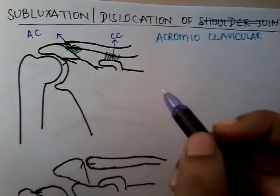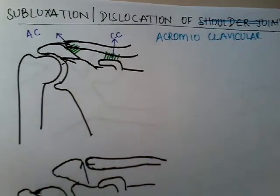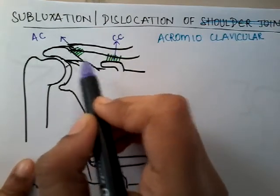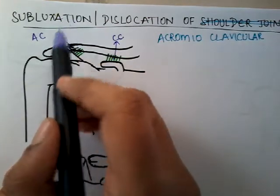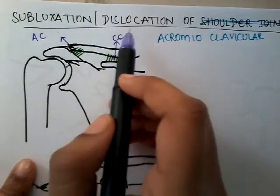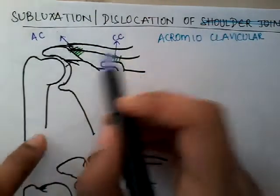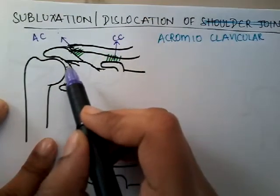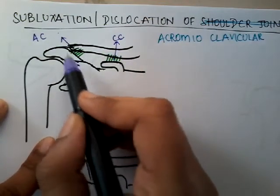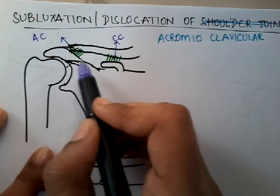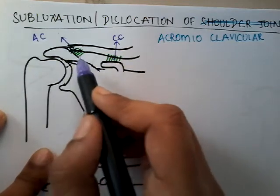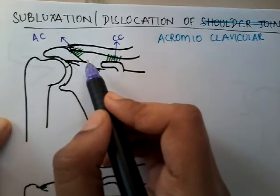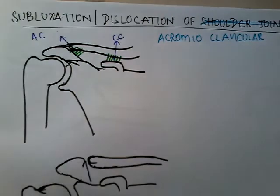Whenever there is partial or complete rupture of this acromioclavicular ligament, it is called subluxation or dislocation. That results in the subluxation of the shoulder joint — specifically, subluxation or dislocation of the acromioclavicular joint.